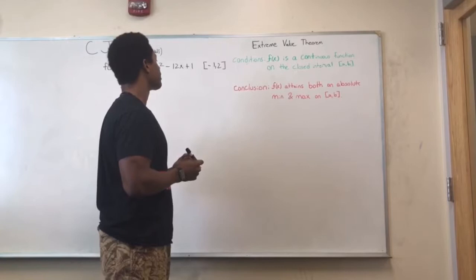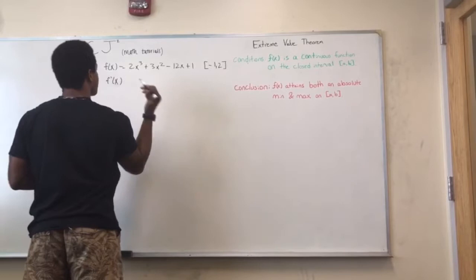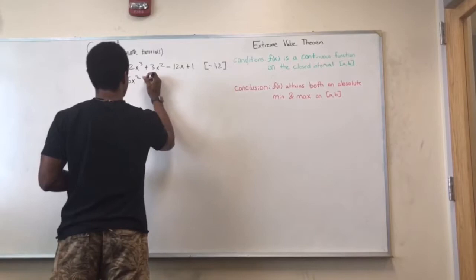So now we have to find the critical points for this function. We'll take the derivative of the function and we'll see that it's 6X squared plus 6X minus 12.